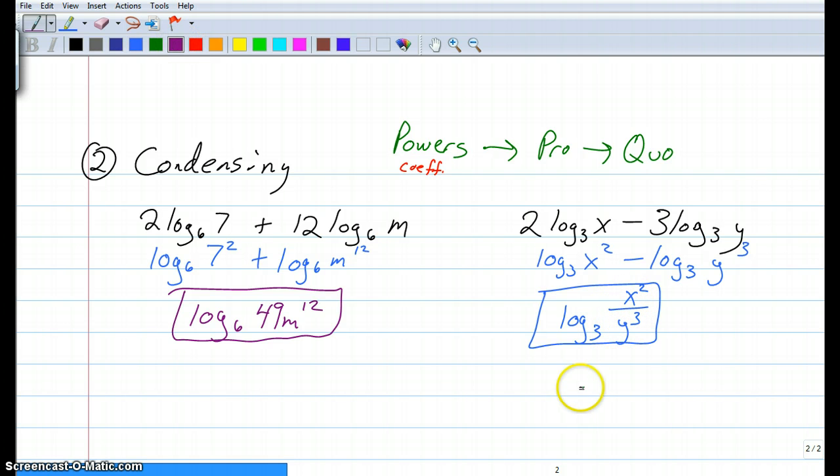This is the only acceptable answer where there's log of a single fraction. Let me show you what I mean by it's not acceptable. Log base 3 of x squared divided by log base 3 of y to the third. I'm going to have at least five kids in each class write this one. I guarantee it. That is absolutely wrong. Do not do that. Don't be that kid. Make sure you are this kid.